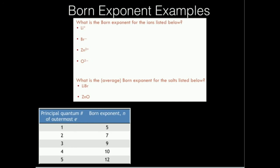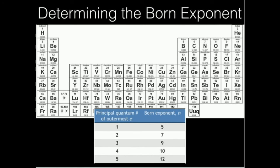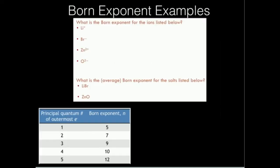Now let's look at oxide, O2 minus. Here's oxygen — it's going to pick up two electrons and have the electron configuration of neon. This is in a 2p orbital, so it's going to have a principal quantum number of the outermost electron of 2, which means oxide will have a Born exponent of 7.